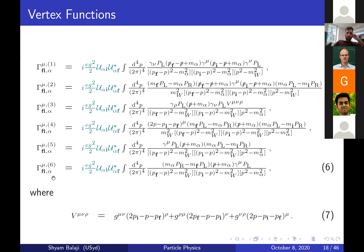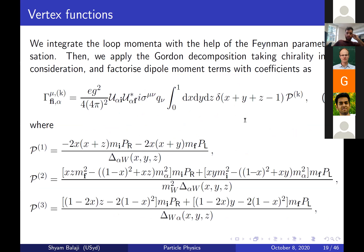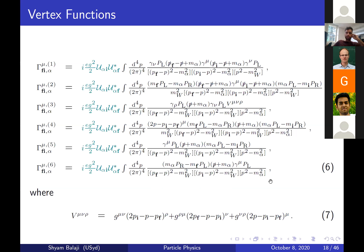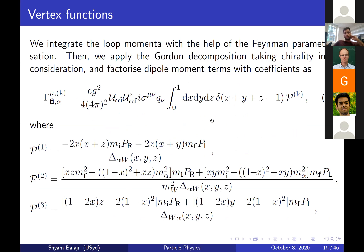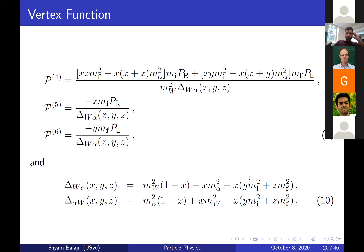After performing dimensional regularization and Feynman parameterization to handle the divergences, the vertex function is rewritten as a simplified expression. It takes the form of the dipole moment terms, factorized into contributions over three Feynman parameters x, y, z with denominator terms denoted Δ for simplicity. The total sum of contributions can be written as a loop function F, which is a dimensionless kinetic contribution factorized from all the vertex contributions.